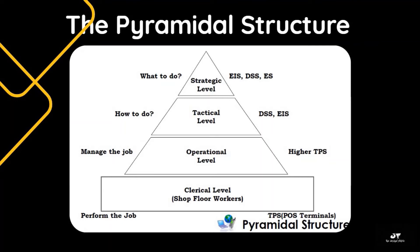The pyramidal structure of an organization comprises of strategic level, tactical level, operational level, and shop floor workers. The strategic management level at the top of the pyramid decides what is to be done, and uses information system components such as expert systems, decision support systems, and executive information systems. The tactical level formulates the strategy on how a job is to be done, using decision support systems and executive information systems. The operational level manages the job and generally works on higher transaction processing systems. The shop floor level performs the job, works at the boundary of the system, and uses transaction processing systems to record daily transactions.